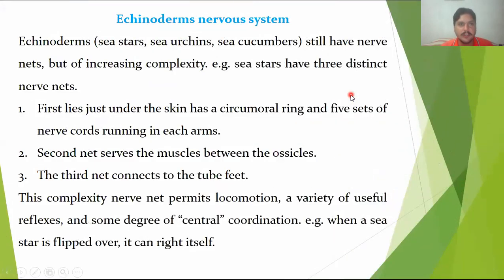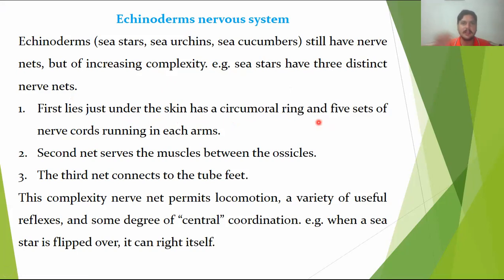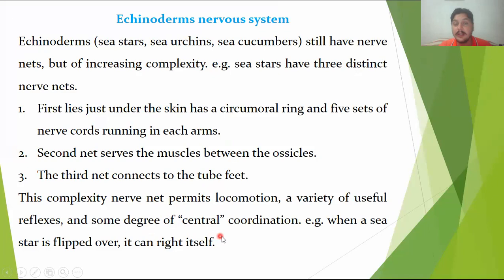This nerve net trend is also present in echinoderms, like starfish, sea urchin, and sea cucumber, in which the complexity is very high. The skin has three distinct nerve nets. The first is below the skin with a circumoral ring and five nerve cords that run into each arm of the starfish. The second nerve net is in the muscles, and the third is in the tube feet.